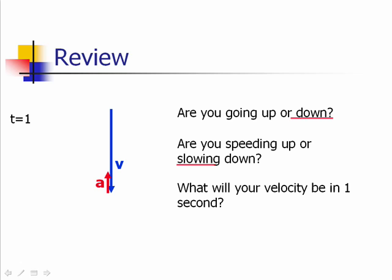Each second that goes by, the acceleration vector tells me how much change occurs to the velocity vector. As seconds go by, the velocity vector gets shorter and shorter until at some instant of time, perhaps I add that acceleration vector and I get zero — meaning you're not moving. But are you stopped for an extended period, or just stopped for an instant at a turnaround point? With the same acceleration, one second later you're going to be traveling upwards. So you've gone from traveling downwards to traveling upwards — that's an acceleration in the upward direction.